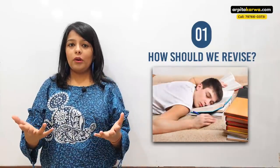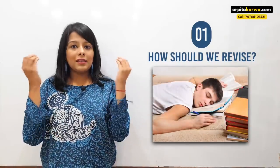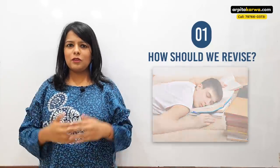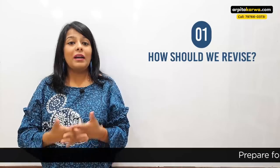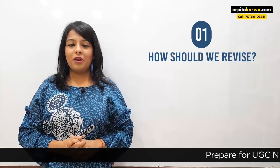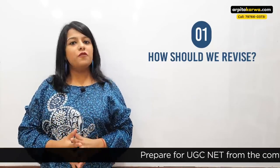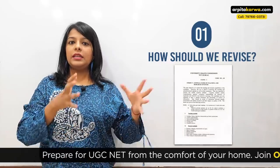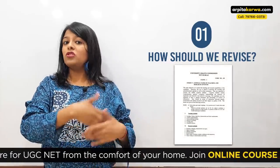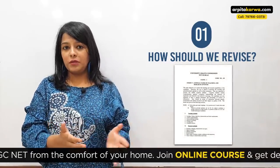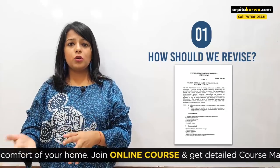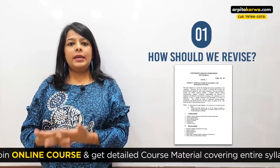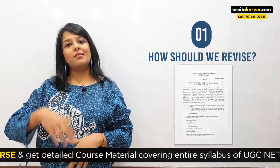As you all know, without revision nothing is going to stay in your brain, and if nothing stays in your brain, how are you going to attempt the paper correctly? So let me tell you very clearly: if you look at the syllabus, there are 10 units in Paper 1, which is common for everybody, and then in Paper 2 it depends upon your subject. For example, in English literature there are 700-plus writers.